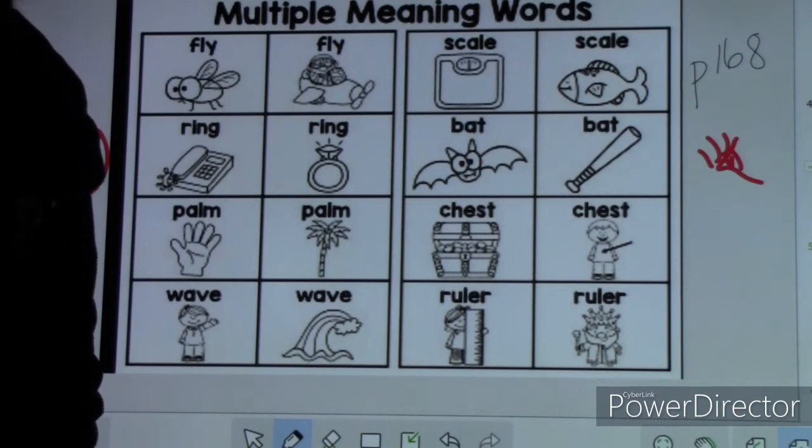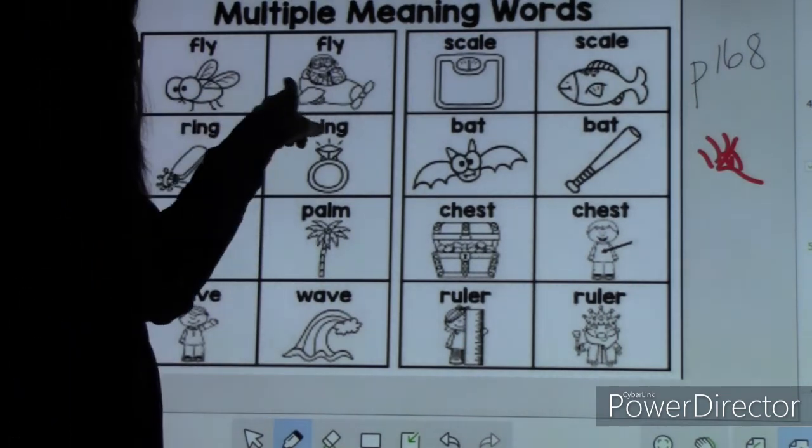And they're telling us that a fly can be a small insect with wings, or to move through the air like a bird or an insect, or in this case, in a plane.